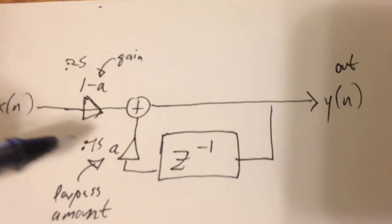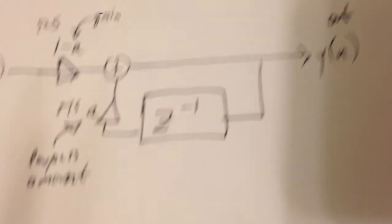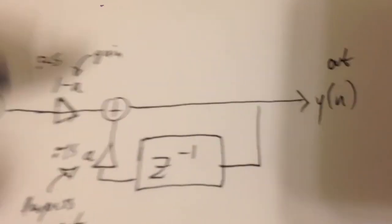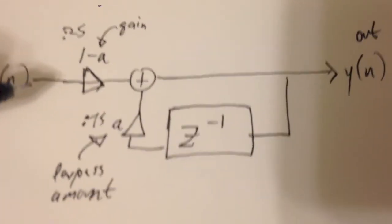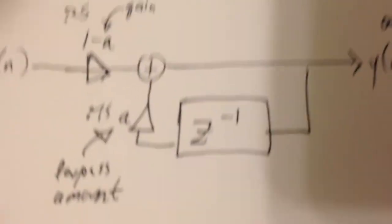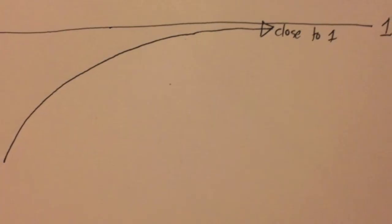And if the low-pass is harsher, it'll rise more slowly. If it's lighter, it'll rise more quickly. It's also worth noting that it never hits one if you're going from zero to one. It gets very close.